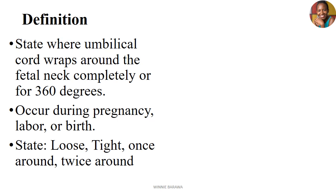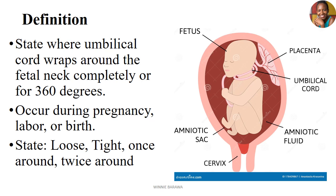The wrapping of the cord can occur at different levels of the pregnancy — it could be during the pregnancy itself, around the period of labor, or during the birth process. The cord can wrap differently: in some instances it can wrap loosely, in some it can be very tight, in some instances it can wrap just once around the neck, and other times twice or more. Via illustration, this is how it looks like — we have our fetus here growing in the uterus.